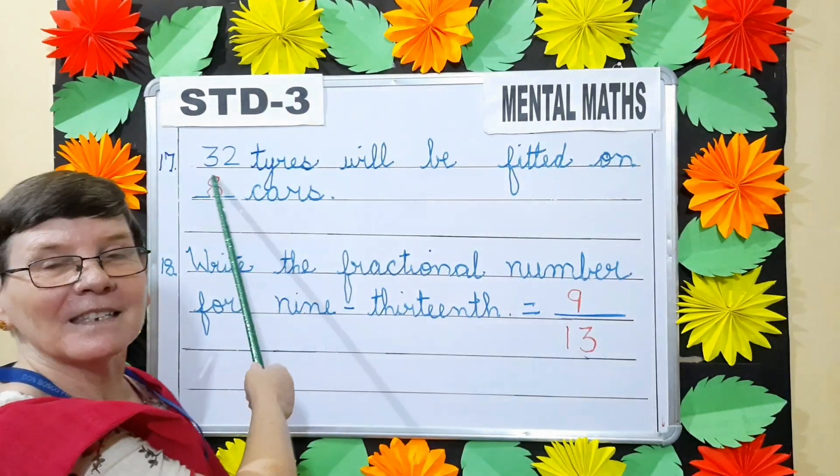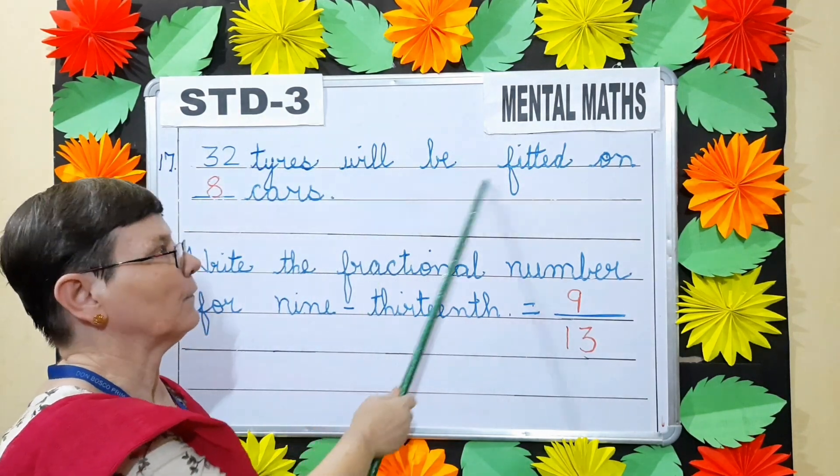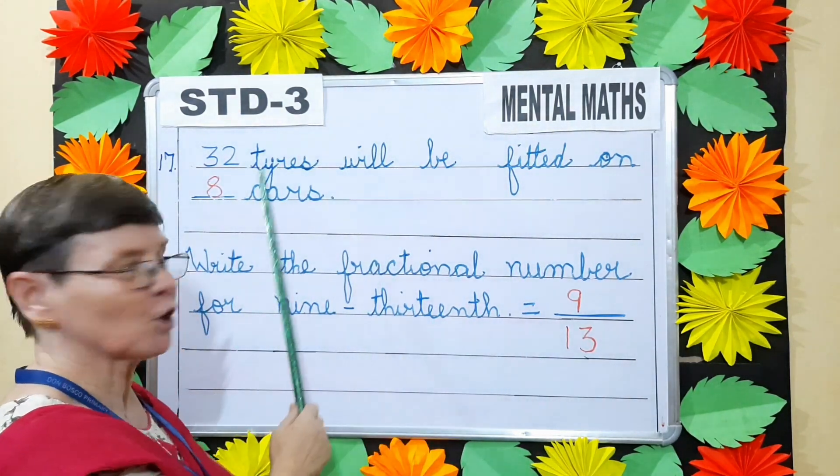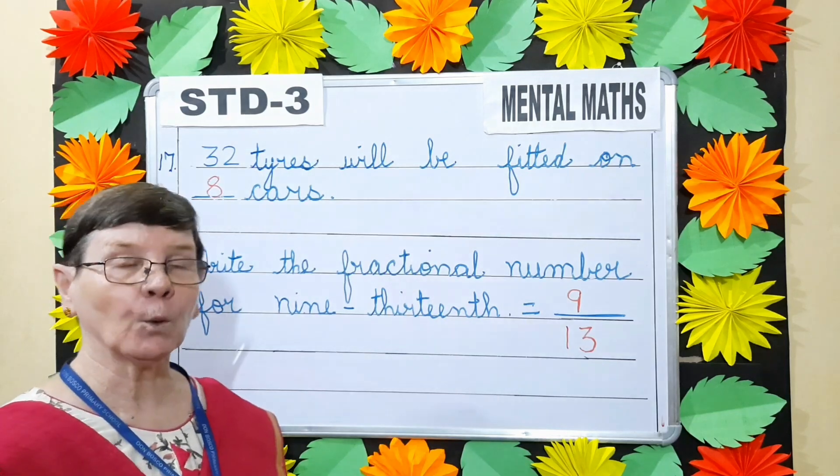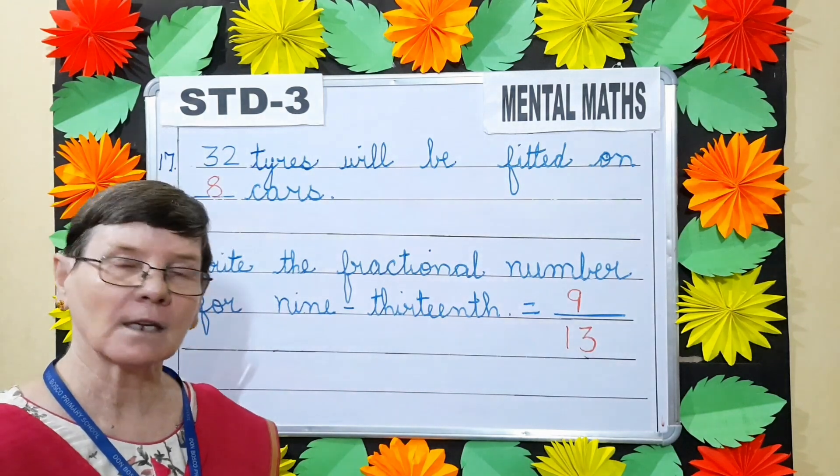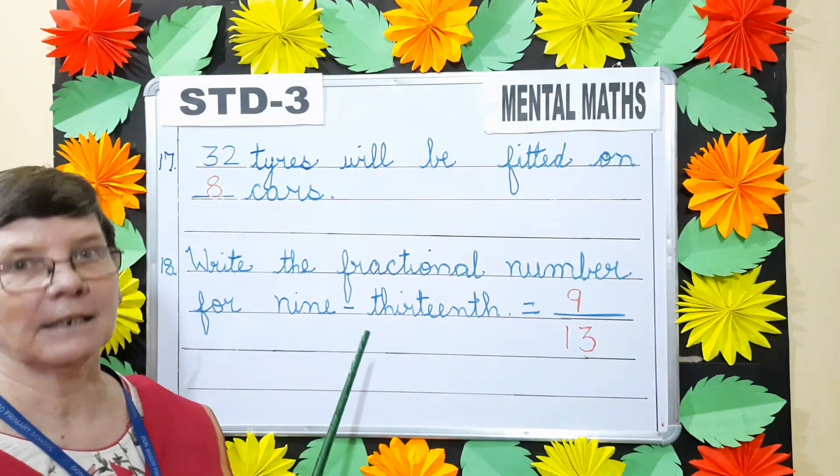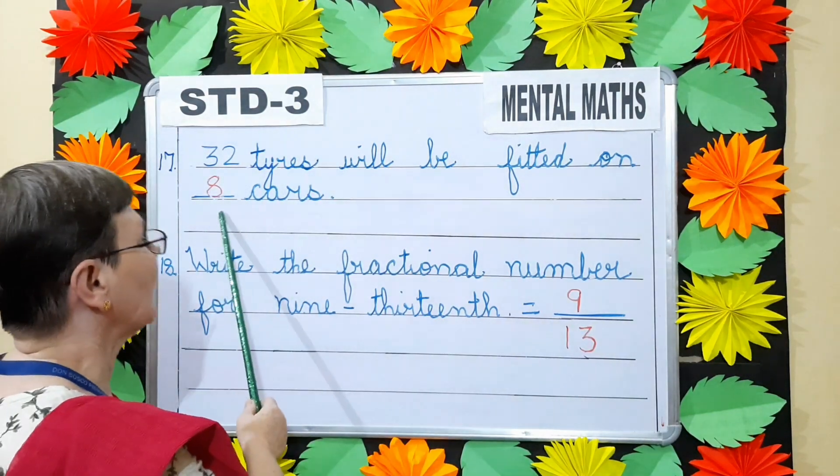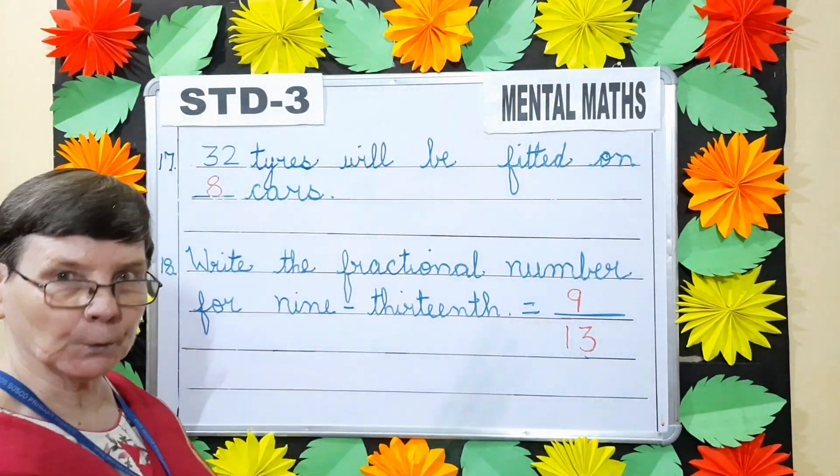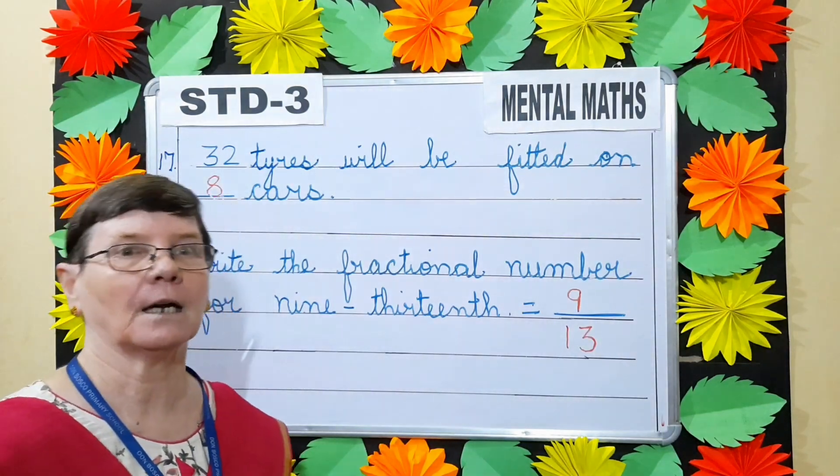Question number 17. 32 tires will be fitted on dash cars. On one car, how many tires children? 4. So now, say your 4 times table till you come to 32. Yes. 4 8's are 32. So the tires can be fitted on 8 cars.